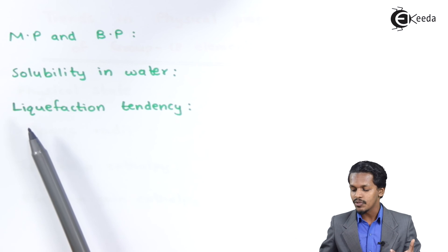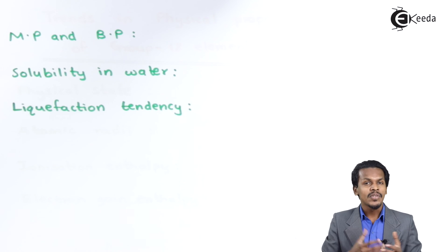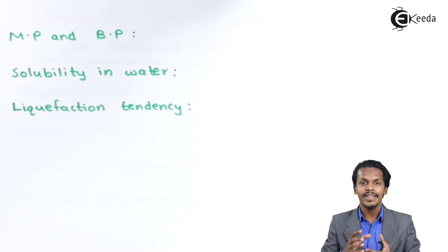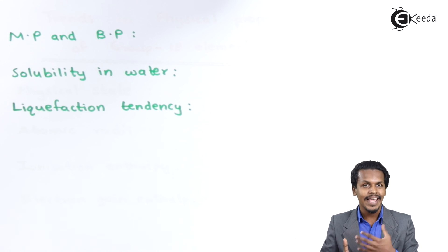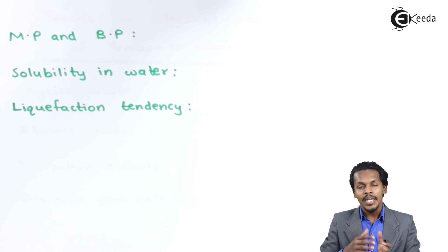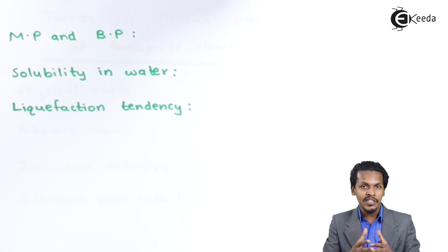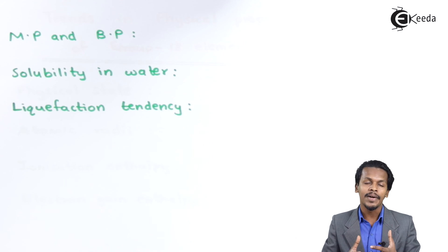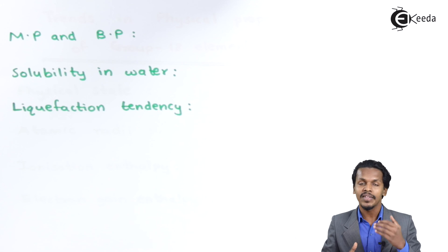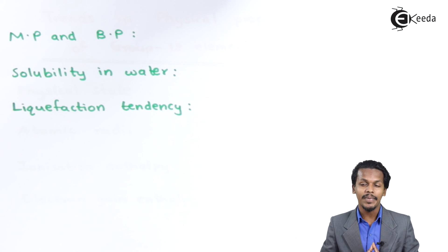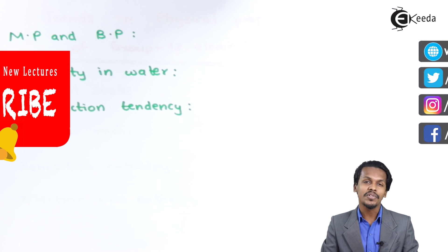Regarding liquefaction tendency: as we move from top to bottom, from helium to radon, the solubility of these gases increases. Accordingly, the liquefaction tendency of noble gases also increases from top to bottom. This concludes the trends in the physical properties of group 18 elements.